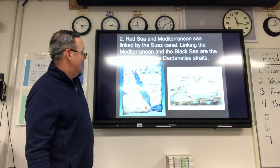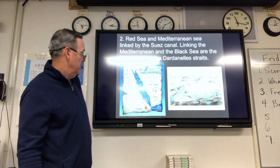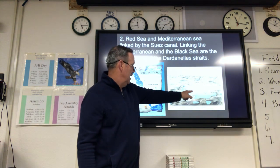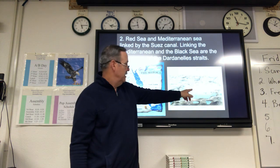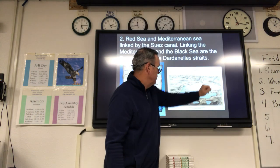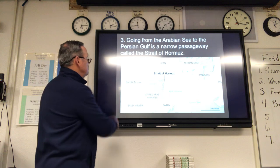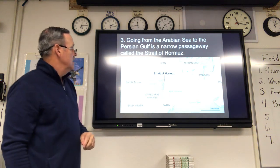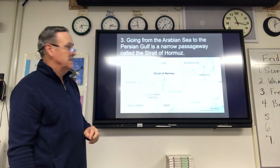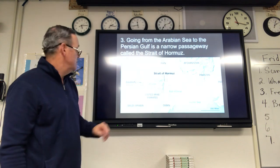Linking the Mediterranean Sea are the Bosporus and the Dardanelles, and between them is the Sea of Marmara. Going from the Arabian Sea to the Persian Gulf is a narrow passageway called the Strait of Hormuz.